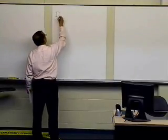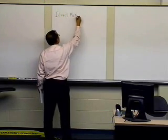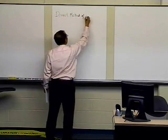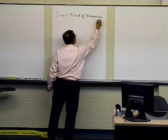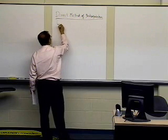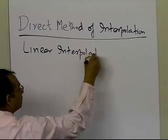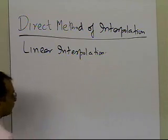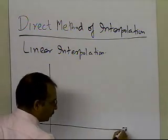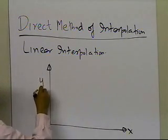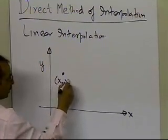In this segment, we're going to talk about the direct method of interpolation, and we'll focus our attention on linear interpolation. So what interpolation is all about is that if somebody gives you the value of the function at certain points — so let's suppose somebody gives you the value of the function at x0, y0,